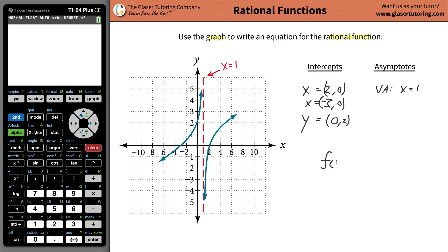So remember, a rational function is simply going to be some polynomial function in the numerator, call it G of X, divided by some polynomial function in the denominator, call it H of X.